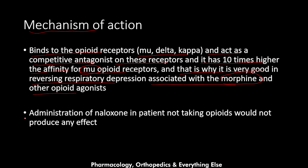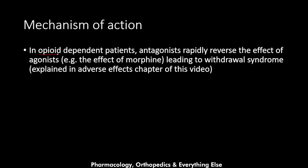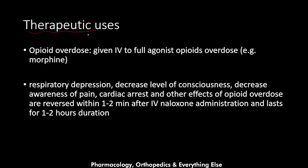Administration of naloxone in patients not taking opioids would not produce any effect. However, if the patient is opioid-dependent, antagonizing their opioid receptors with naloxone will reverse the effect of the agonist — for example, the effect of morphine — leading to withdrawal syndrome. These symptoms arising from reversal of the opioid effect will be explained further in the adverse effects section.